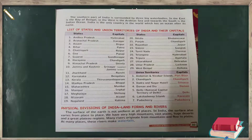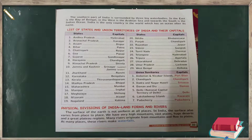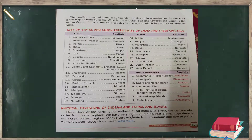Here is the list of states and their capitals: Andhra Pradesh – Hyderabad; Arunachal Pradesh – Itanagar; Assam – Dispur; Bihar – Patna; Chhattisgarh – Raipur; Goa – Panaji; Gujarat – Gandhinagar; Haryana – Chandigarh; Himachal Pradesh – Shimla; Jharkhand – Ranchi.